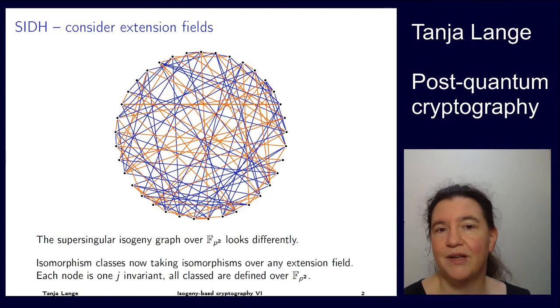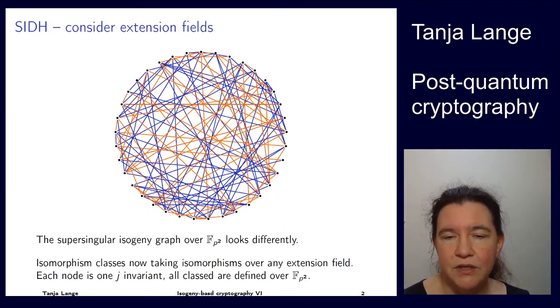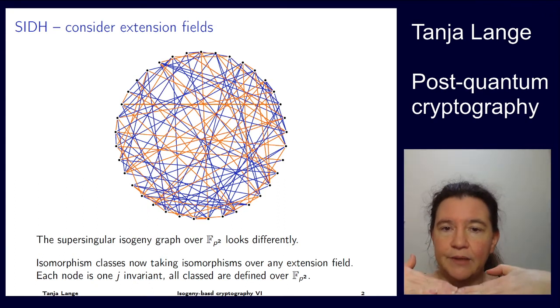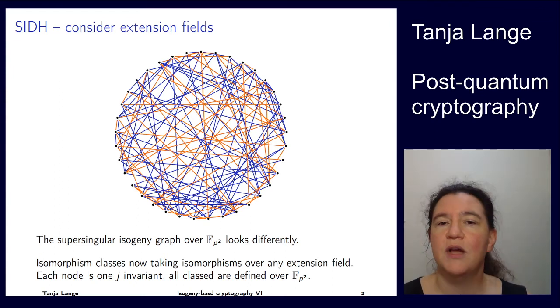All right, so now we're looking at something quite different from the picture that we had so far. There's still an isogeny graph, but we're now looking at isogeny graphs of supersingular curves over fp squared. So no longer just fp as we had in the previous examples, but this one is over fp squared. And there's also some difference in how we define things.